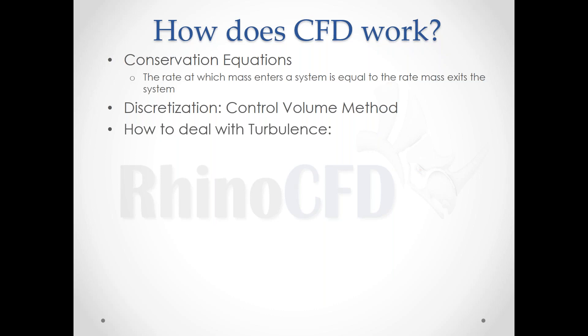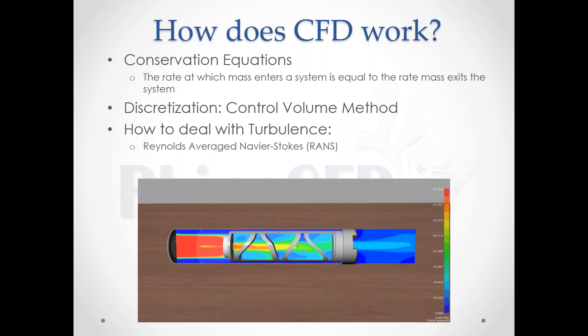Turbulence is one of the most complicated parts of CFD. You can apply a model such as Reynolds-Averaged Navier-Stokes (RANS), which doesn't solve turbulence explicitly at very small scales — it applies a model instead. There are different models depending on what you're interested in, and it's a very economical way of solving this issue, giving run times down to minutes or hours.